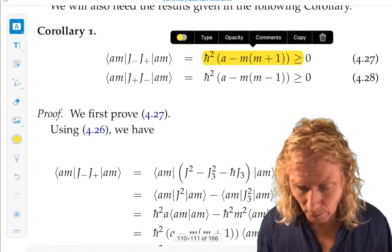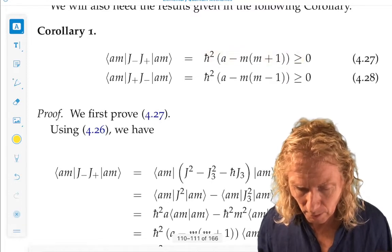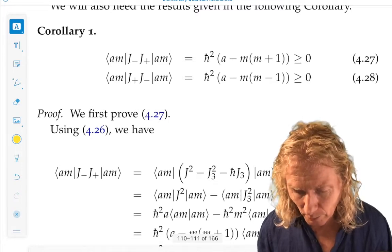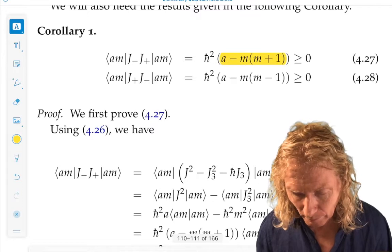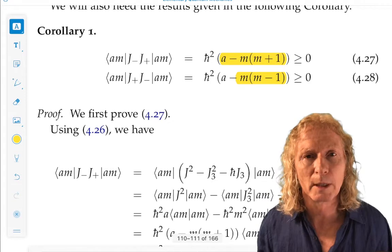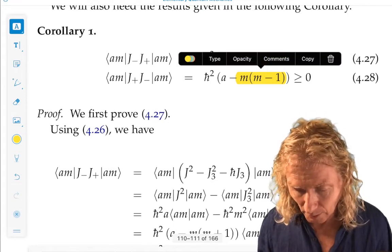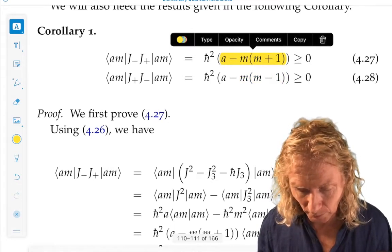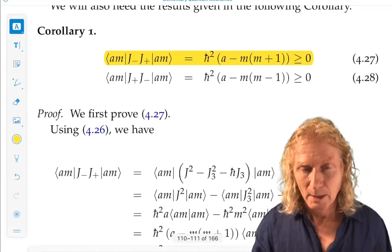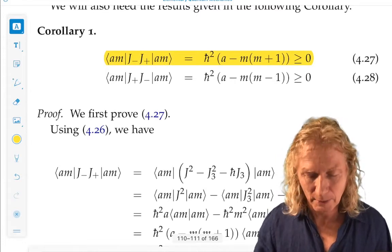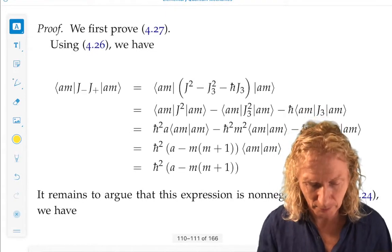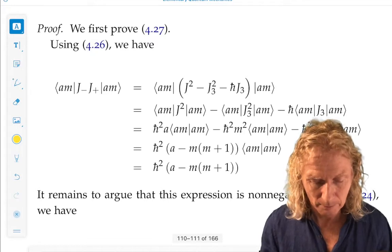Alright, so let me point out one thing. If that's going to be the case, then a must be larger than whichever is bigger, m times m plus 1, or m times m minus 1. That'll come back to have some consequences a little bit later. So we're going to prove the first one, and the second one, if you understand all the details of the first one, it's pretty easy. It's the same thing, essentially. It's a calculation. Write it out.